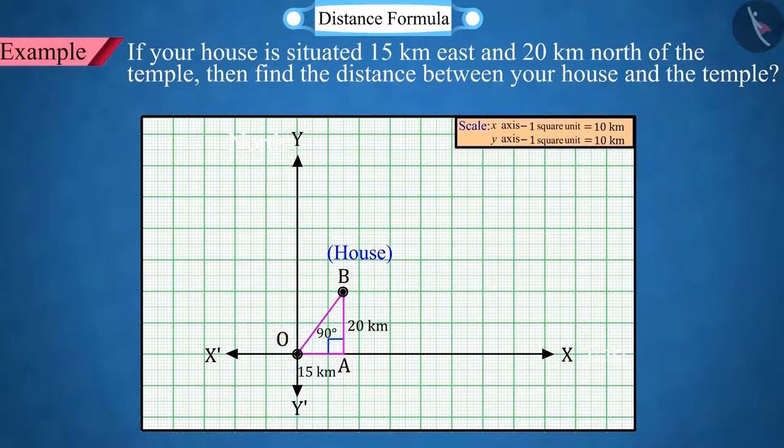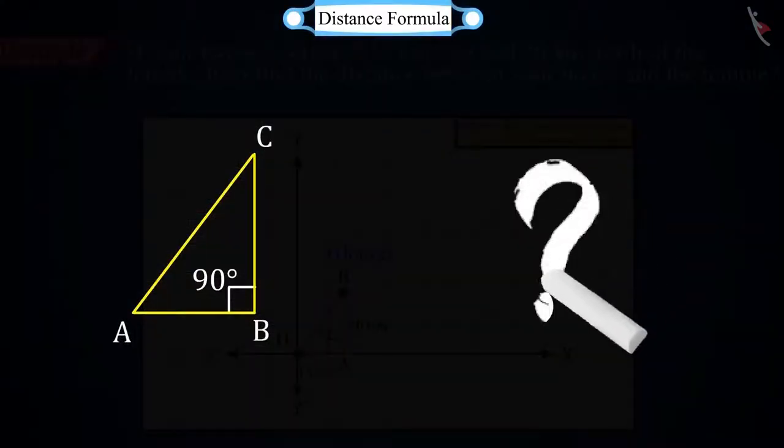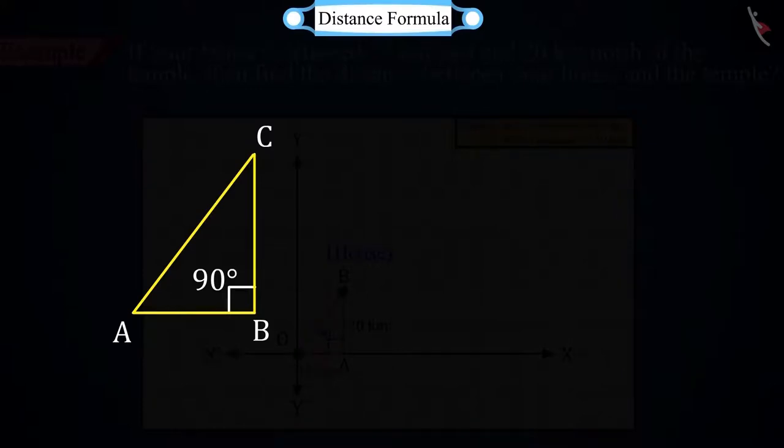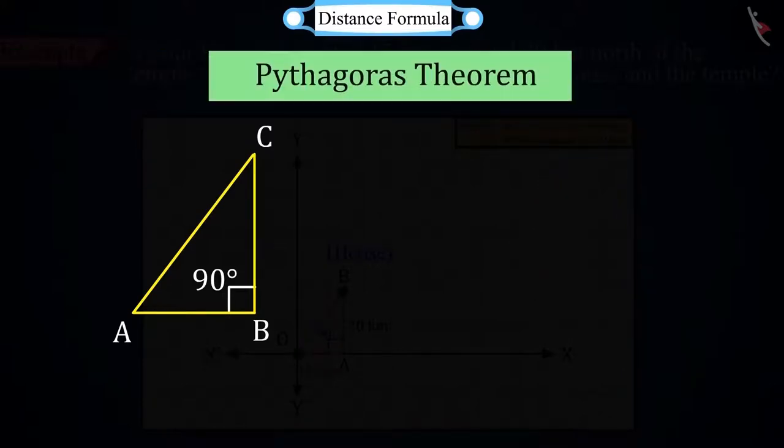Here, the line OB tells the distance between the temple and the house. Can you tell something by looking at this right-angled triangle? Good. In the first chapter, we learnt that in a right triangle, the square of the hypotenuse is equal to the sum of the squares of the remaining two sides, which is the Pythagoras theorem.